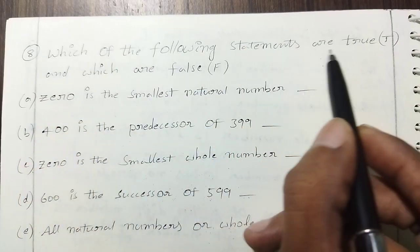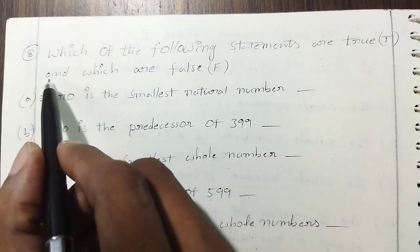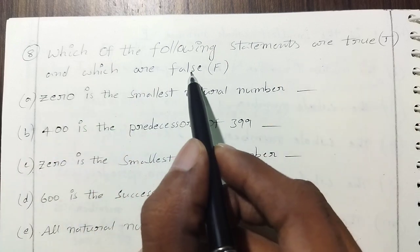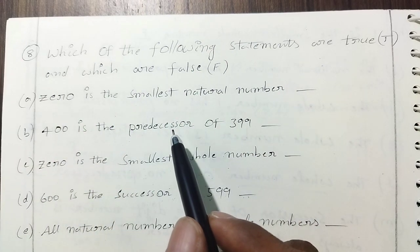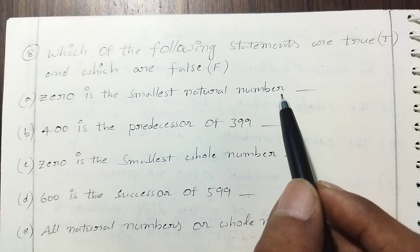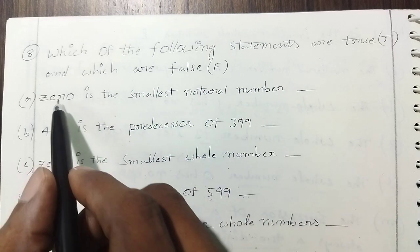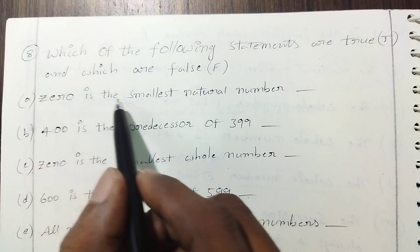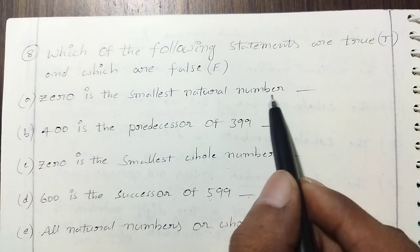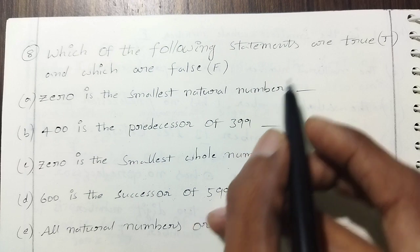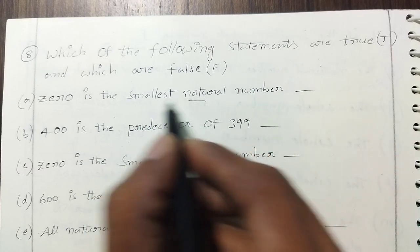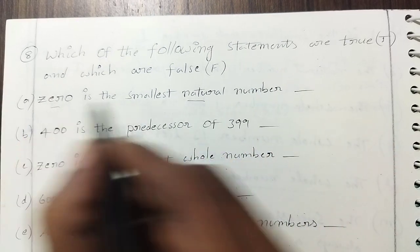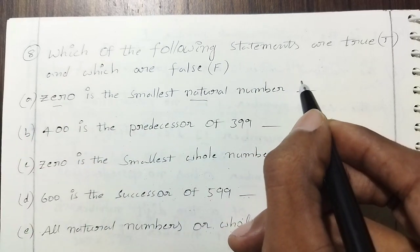Which of the following statements are true and which are false? First, '0 is the smallest natural number.' This is false. Natural numbers start from 1, so 0 is not included, making this statement false.